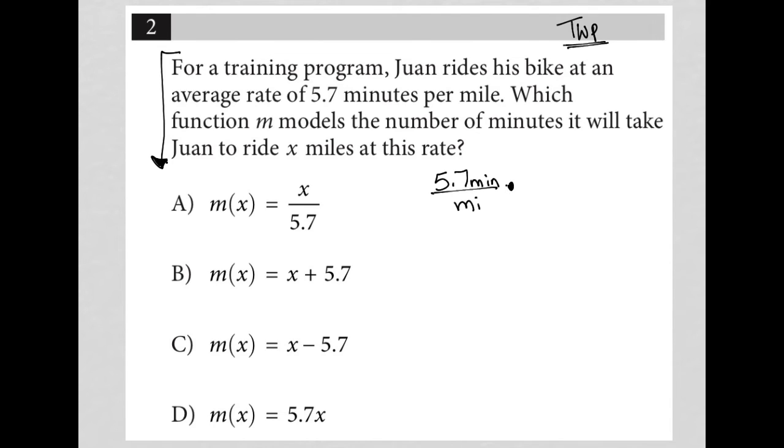I would simply multiply this rate by X miles. That would allow me to cancel out my miles here and leave me with just the unit minutes, which is exactly what the question is asking for. What number of minutes it will take Juan to ride those X miles.